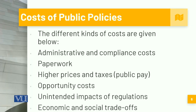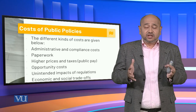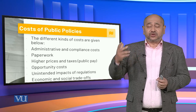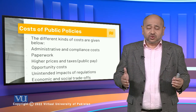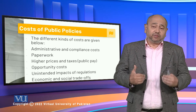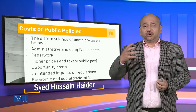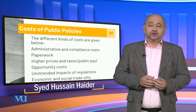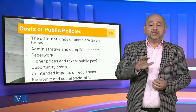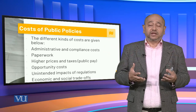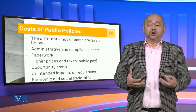We also see that different types of costs include administrative or compliance costs — such as paperwork, higher prices and taxes — as well as opportunity costs, unintended impacts of regulation, and economic and social trade-offs. Through these trade-offs, sometimes to gain something you might also be losing something. Through these different costs and controls, the government tends to further improve the economy at large, bringing in interventions that stabilize the economy so that benefits trickle down to the common man.